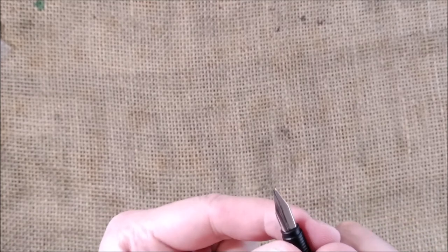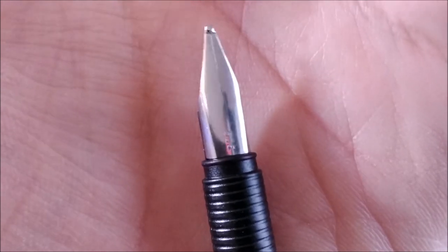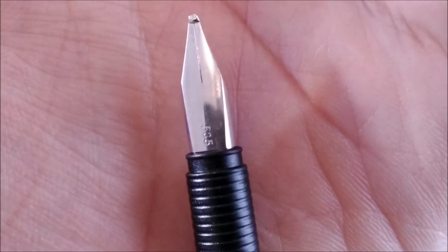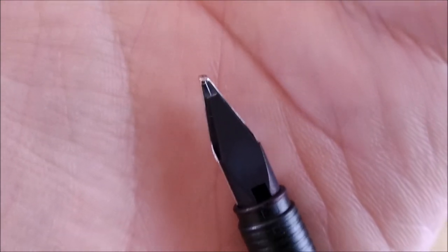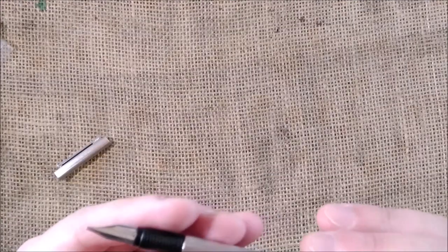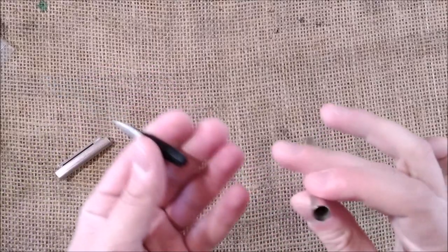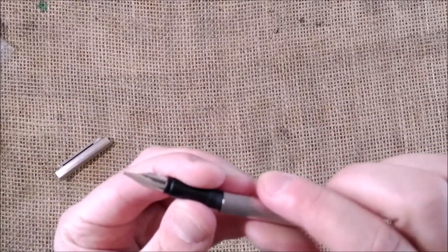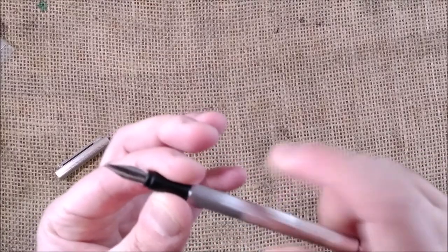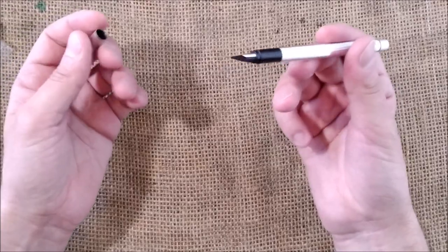And then we uncap the pen and we have this nib which is a gold nib and it is an oblique, I think it is an oblique broad. The pen will unscrew, it has no cartridge inside, or converter.